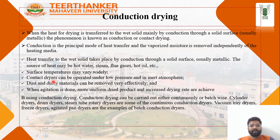Contact dryers can be operated under low pressure and inert atmosphere, so dusty material can be removed effectively. When agitation is applied, a more uniform dried product is achieved and the drying rate increases. Conduction drying can be carried out either continuously or batch-wise. Types of conduction dryers include cylinder dryer, drum dryer, steam tube rotary dryer for continuous drying, and vacuum tray dryer, fish tray dryer, and agitated pan dryer for batch drying.